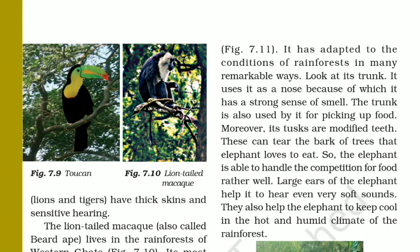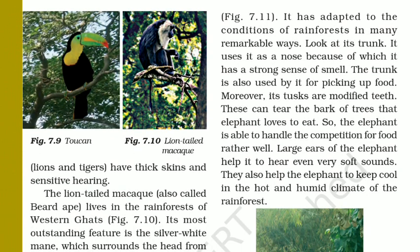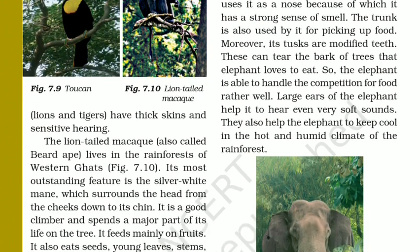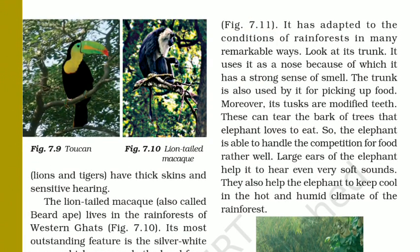On the other hand, here we can see the picture of the long-tailed macaque. These long-tailed macaques are also known as the beard ape. Their body structure is such that they have a silver-colored white mane. Their long tail helps them to grab branches very easily, and their thick skin as well as their skin color helps them to camouflage from their predators. Camouflage means they hide themselves to protect from predators, and because of their skin color they can easily do so.